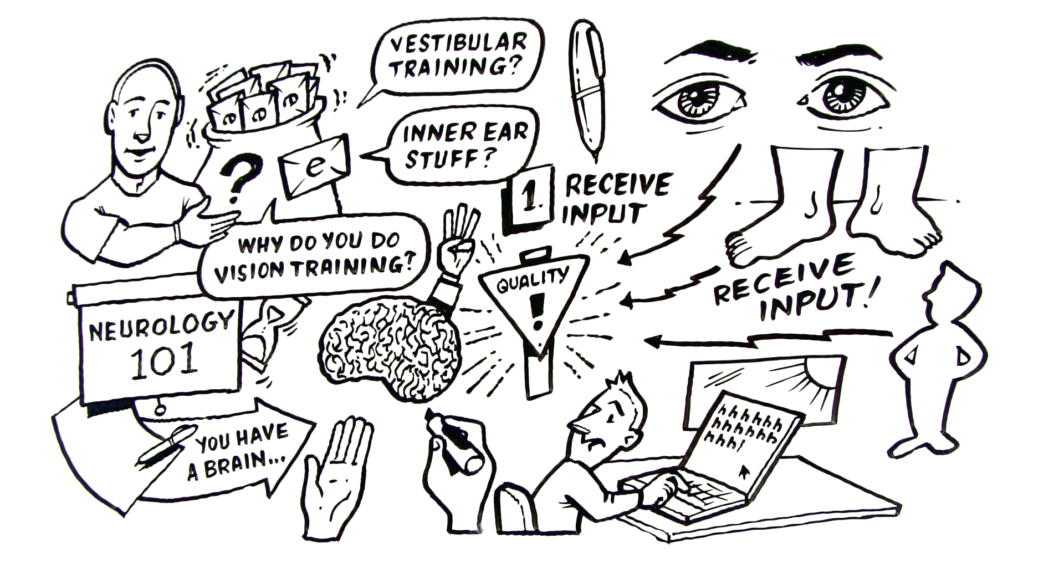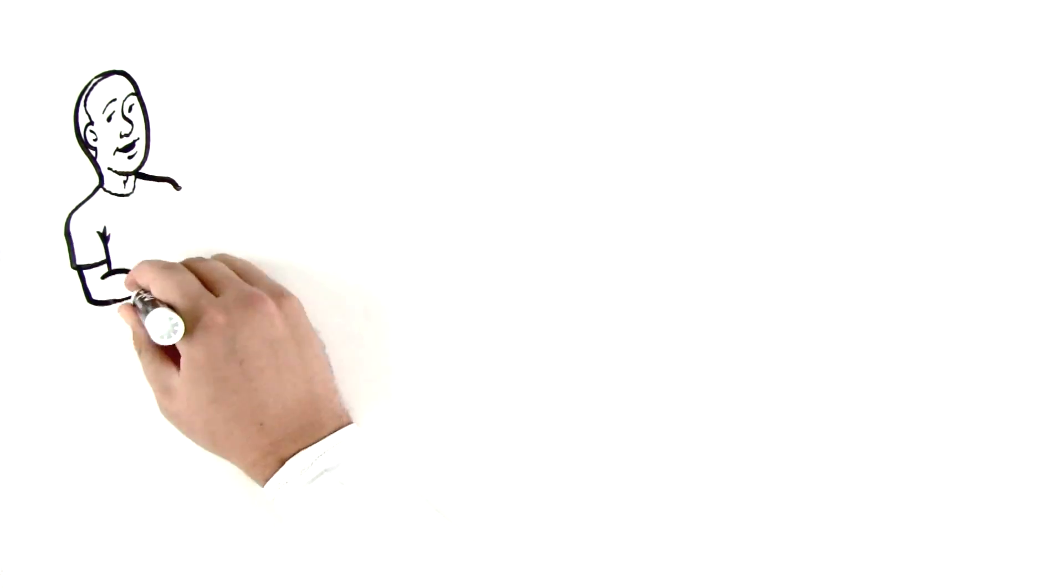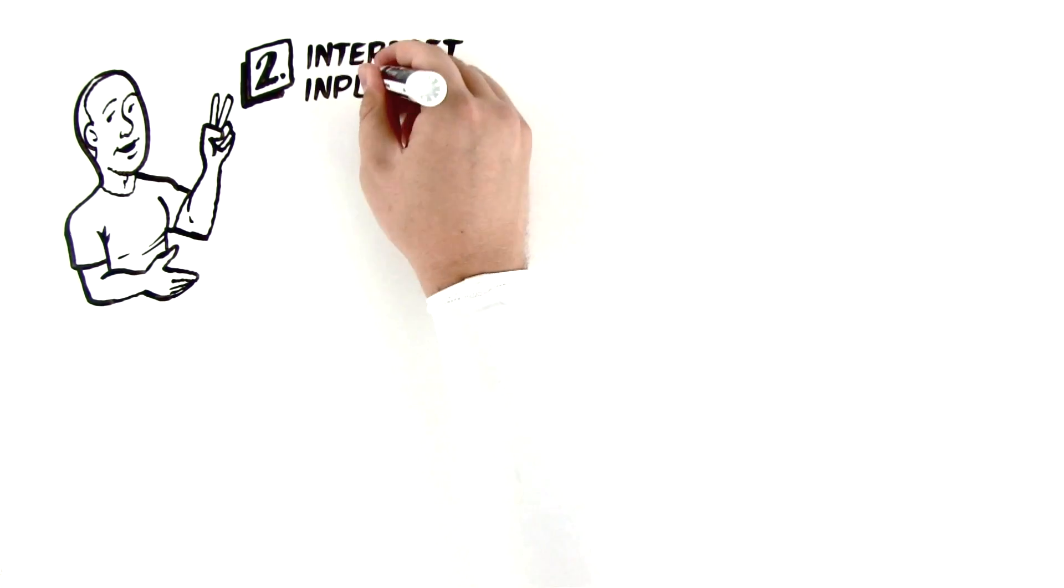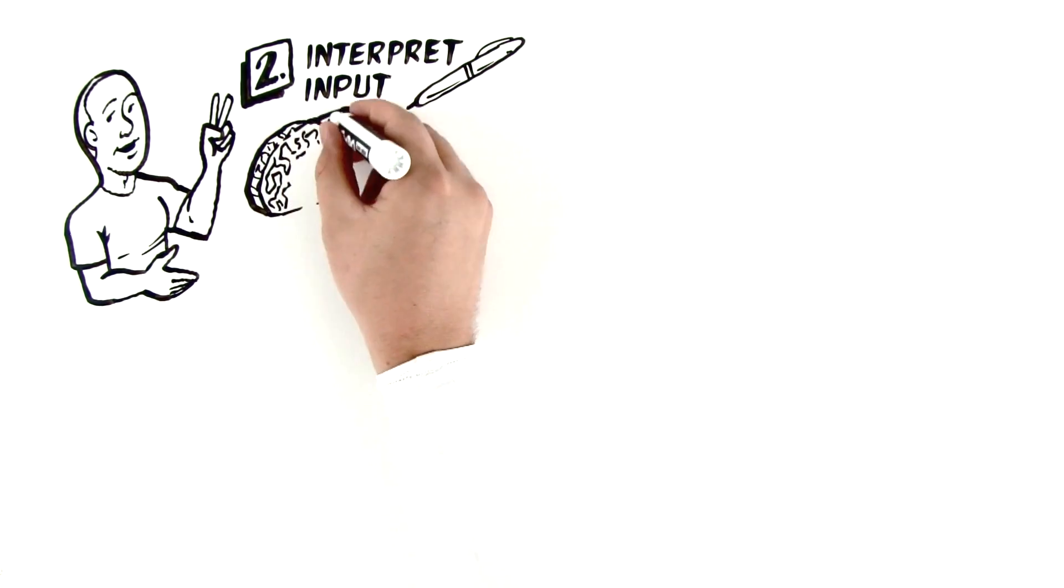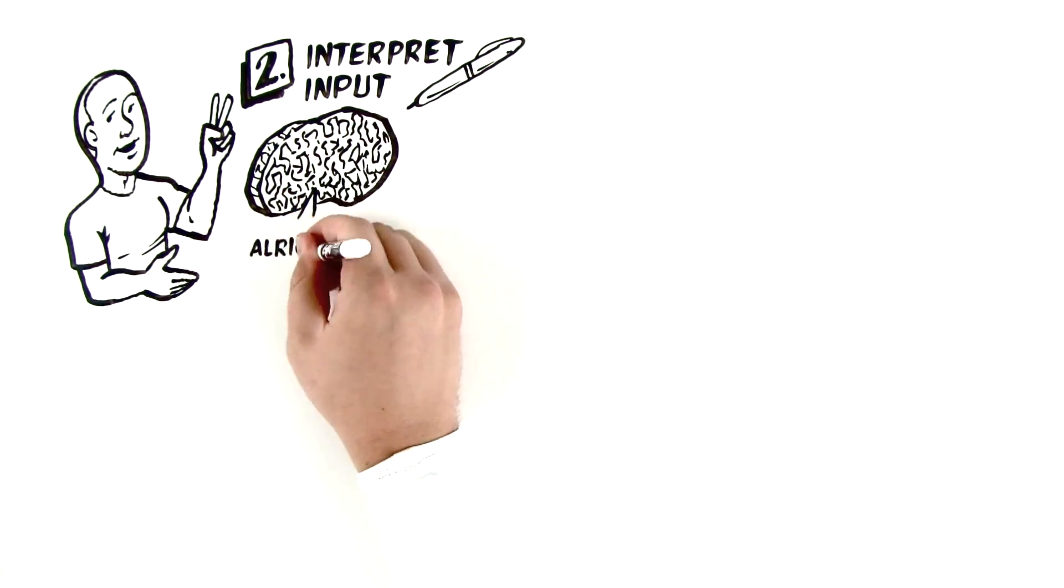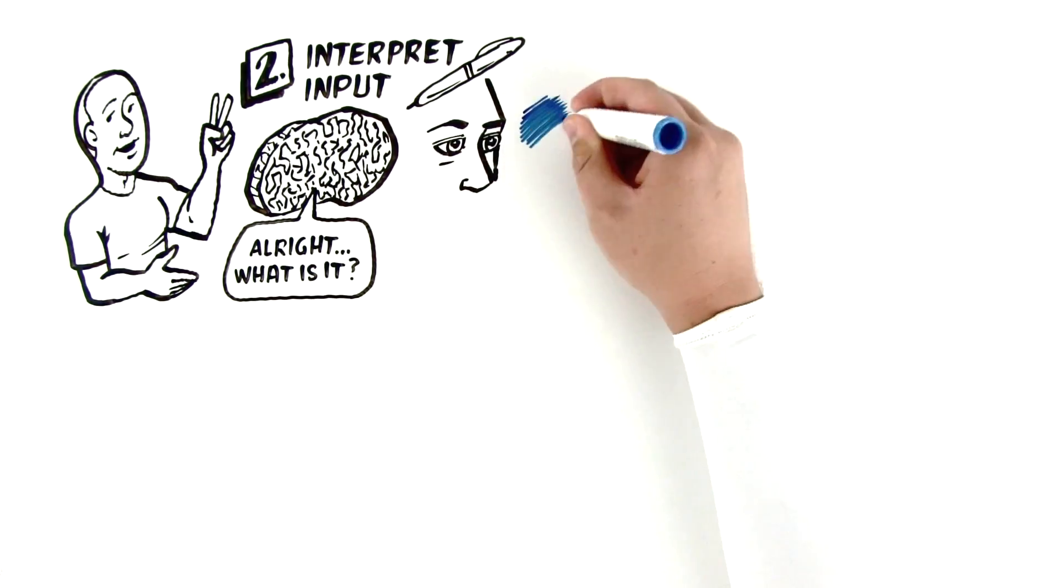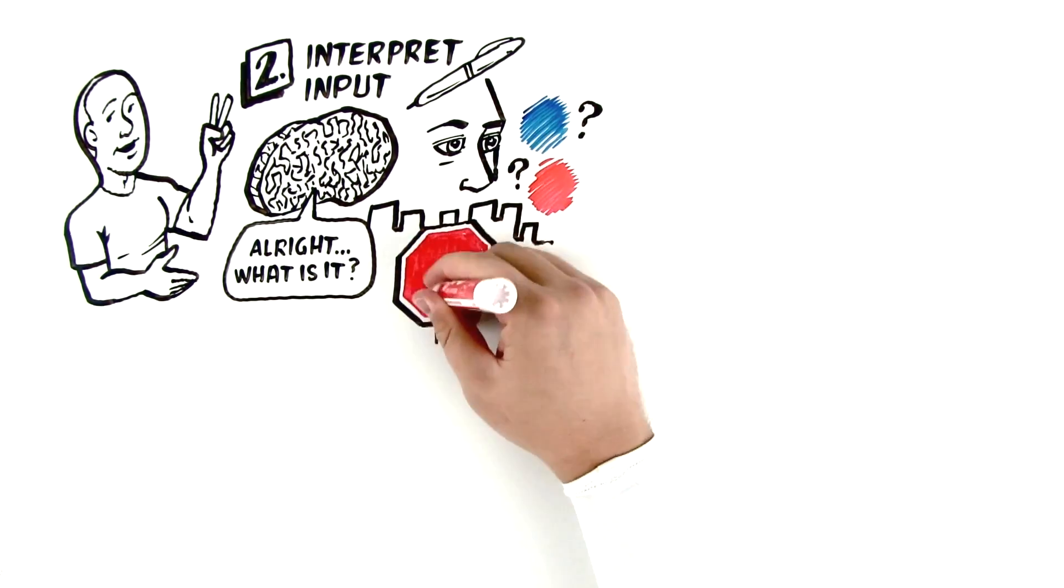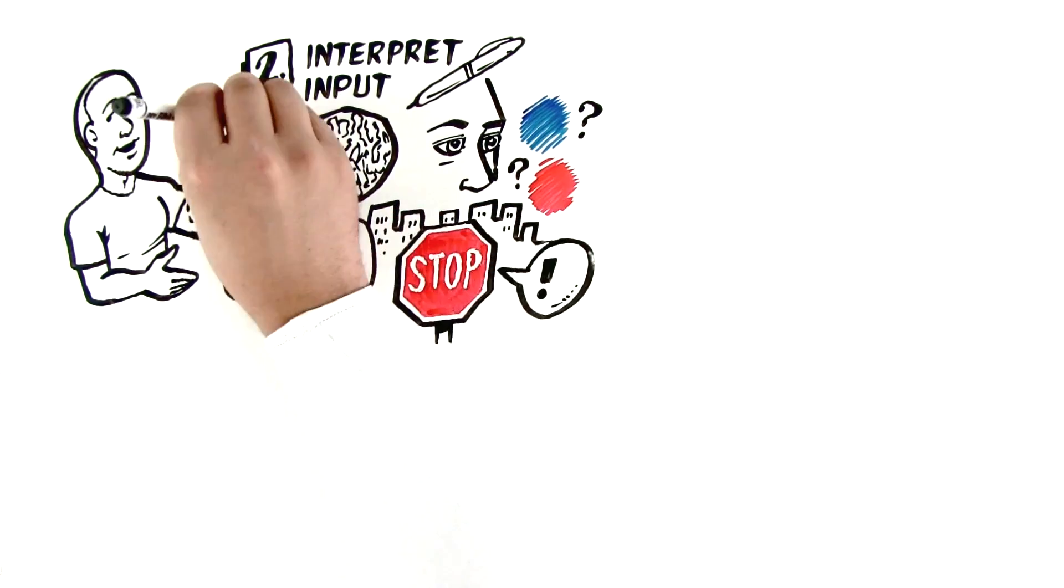Number two then, the second task of the brain is to receive that input and interpret it. The brain has to interpret and decide. So task number two is to take that information in and go, what is it? First of all, the signal I'm getting from my eyes, is that the color blue? Is it the color red? That's the interpretation. And does that matter? Oh, it's a stop sign. Yeah, it actually matters. So the decision part is very important.